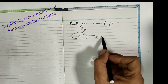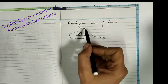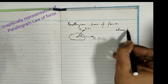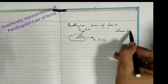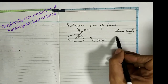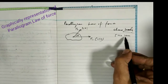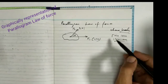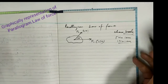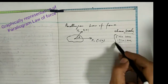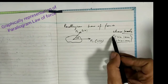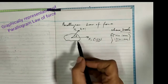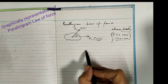For the graphical method, let's say F1 is 15 newton and F2 is 10 newton. We first choose a suitable scale — for example, 5 newton is represented by 1 centimeter. So for 15 newton we get 3 centimeters, and for 10 newton we get 2 centimeters. We will draw the vector diagram accordingly.